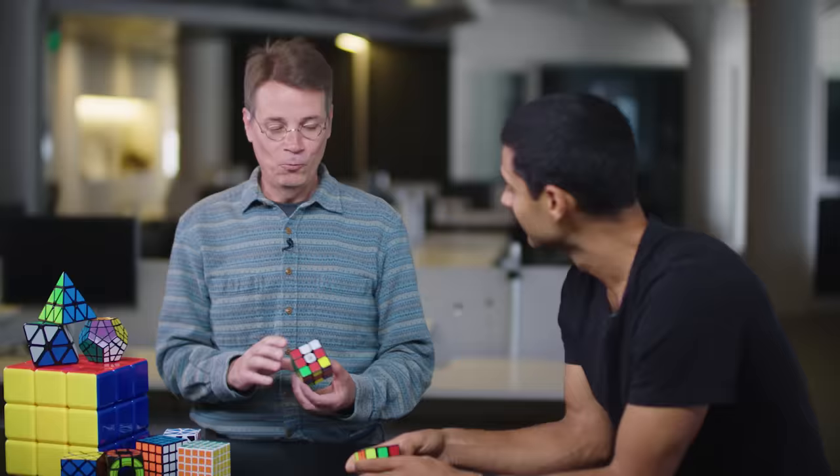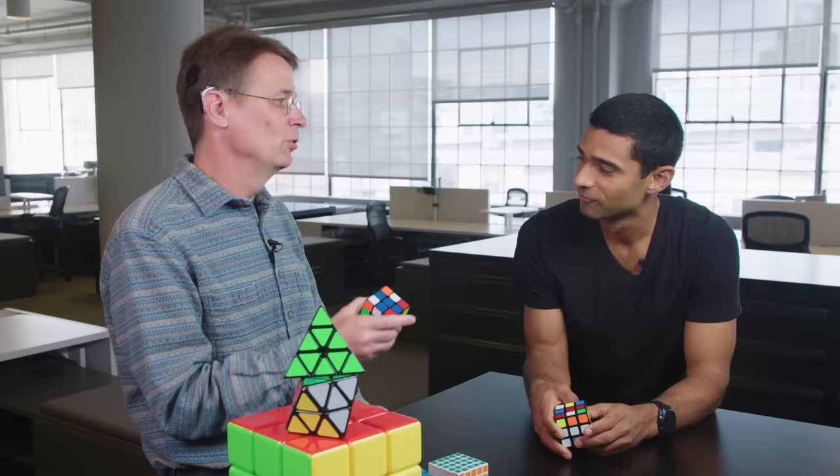There's 43 billion billion positions, which is 43 quintillion. So it's really a big number. Rokicki has been fascinated with the cube ever since he was a kid.